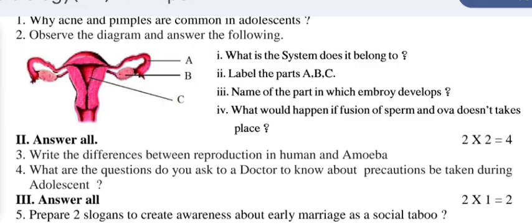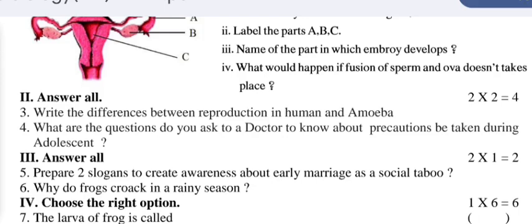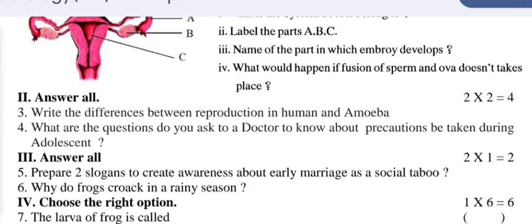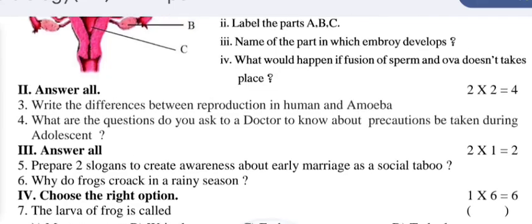Number four: What would happen if fusion of sperm and ovum does not take place? Answer all two questions for two marks. Write the difference between reproduction in humans and amoeba. What questions do you ask a doctor to know about precautions to be taken during adolescence?